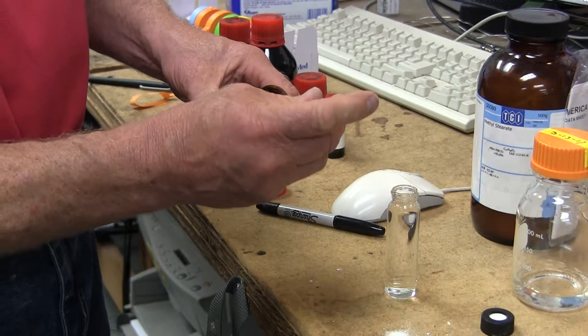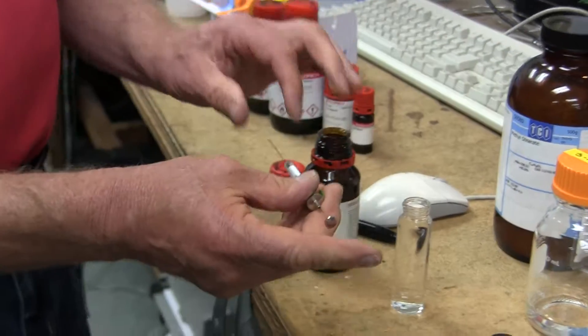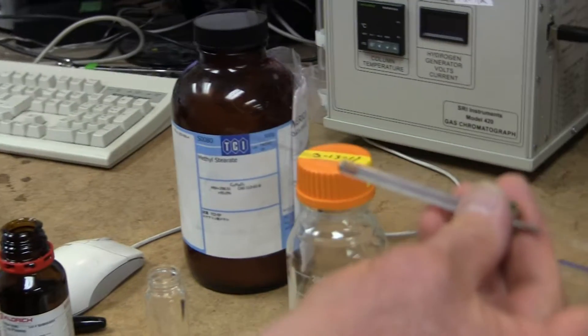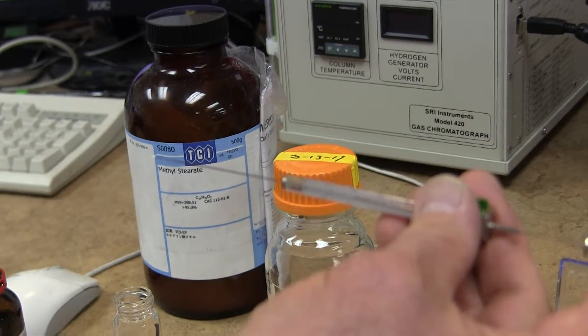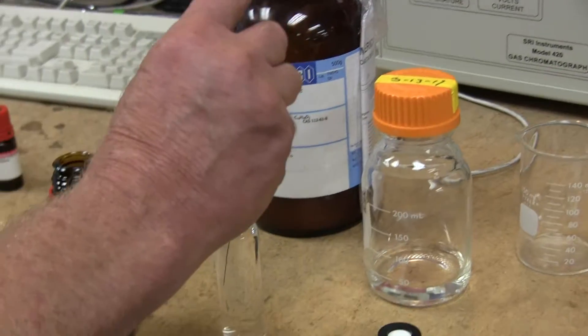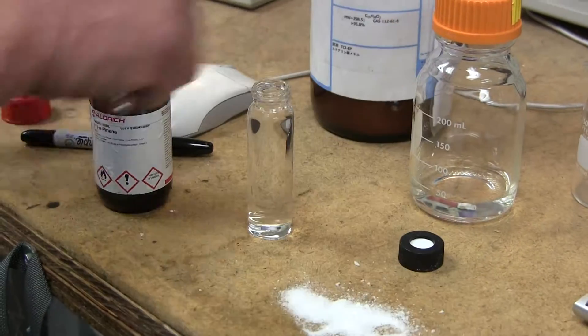These terpenes are a little more viscous, so you have to operate the syringe a little slower to avoid bubbles. But eventually you get four microliters of the alpha pinene in your syringe, and then you put it into the 40 milliliters of internal standard solution.